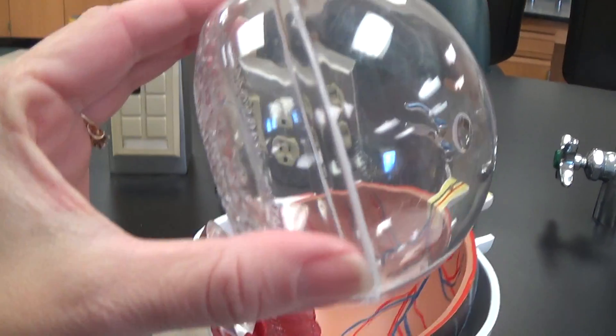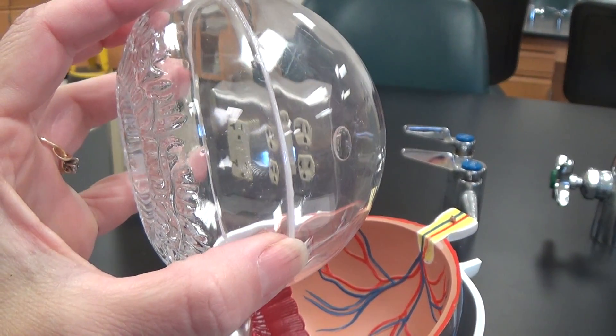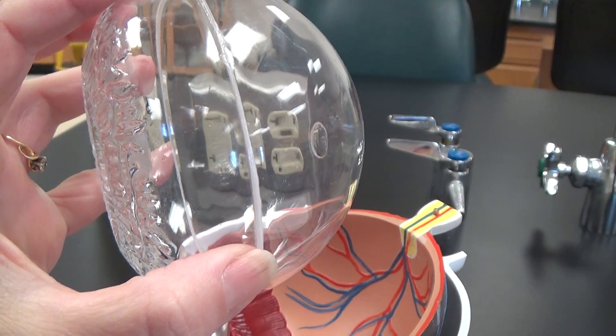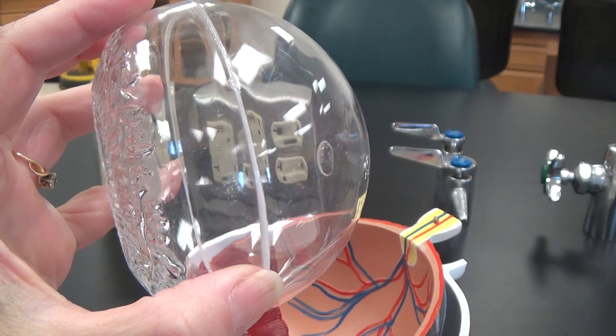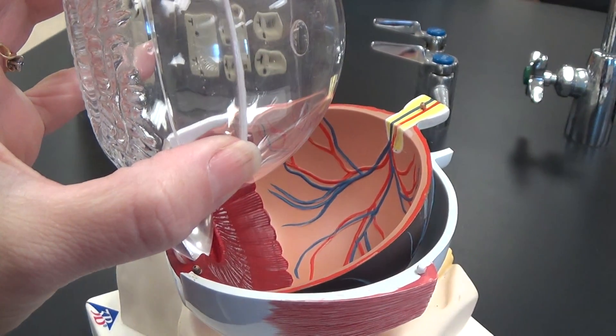This plastic ball represents the posterior cavity of the eye, which has the vitreous humor in it. And that covers all the structures on our eye model. Thank you.